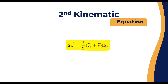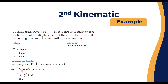Example using the second kinematic equation: a train traveling at 16 meters per second (v-initial) is brought to rest (v-final = 0) in 8 seconds. Find the displacement while it comes to a stop, assuming uniform acceleration. Using Δd = one-half × (v-initial + v-final) × Δt gives: one-half × (16 + 0) × 8 = 64 meters.